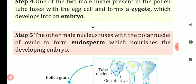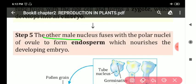The other male nucleus fuses with the polar nuclei to form the endosperm. One male nucleus fuses with the egg cell to form the zygote, which nourishes the developing embryo.